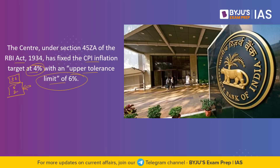If there is a breach of 6 percent and above, or if inflation falls below 2 percent, that is when the Reserve Bank of India is held accountable for its actions. Under Section 45ZN of the RBI Act, the RBI will also have to submit a report to the central government explaining why it failed to achieve the inflation target and provide a remedial action plan as well.